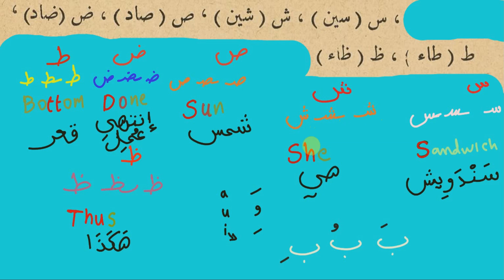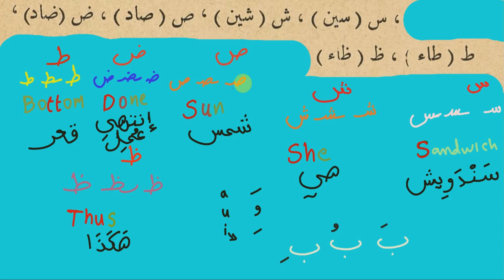SHA sounds similar or approximate to the SHA in 'SHI HIA' — in Arabic: HIA, SHI, HIA. This here is the SA.